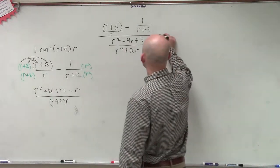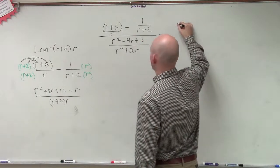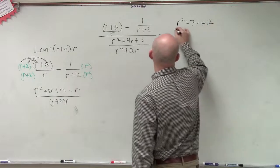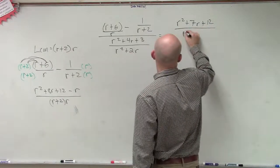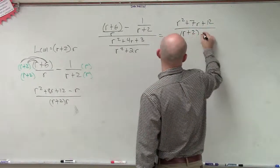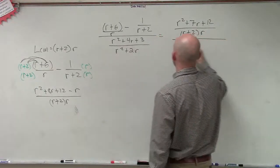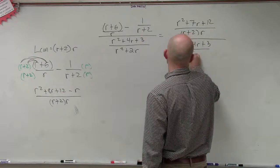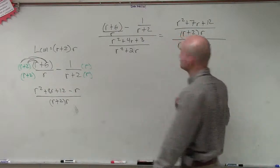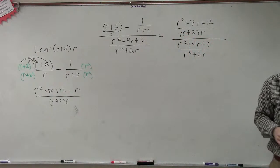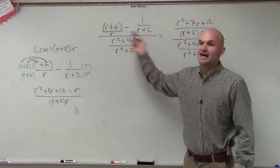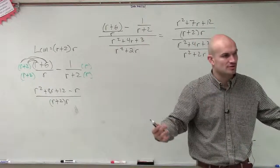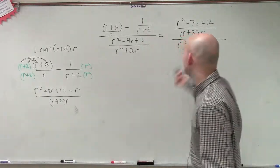So therefore, I can rewrite this problem now as r squared plus 7r plus 12 divided by r plus 2 times r divided by r squared plus 4r plus 3 divided by r squared plus 2r. So what I did is I rewrote this as, instead of subtracting two rational expressions, I rewrote it as one singular rational expression. Now, I'm dividing.